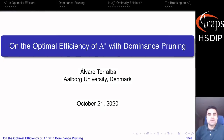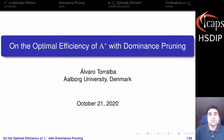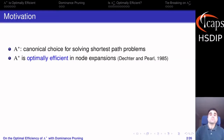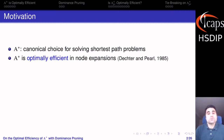Hello everyone. I'm Álvaro Torralba and today we are going to talk about the optimal efficiency of A-star with dominance pruning. A-star is a heuristic algorithm that is a typical choice for solving shortest path problems, and the reason is because A-star is optimally efficient in terms of node expansions, and we have known this since long ago.